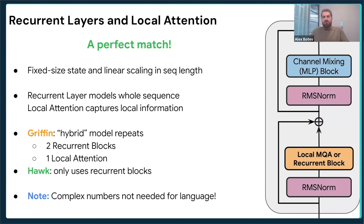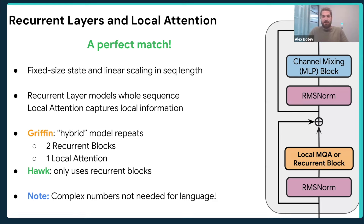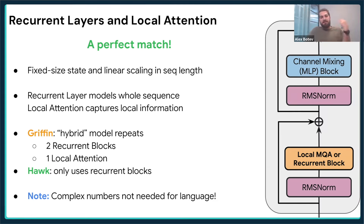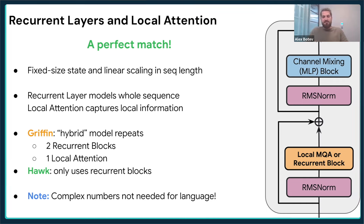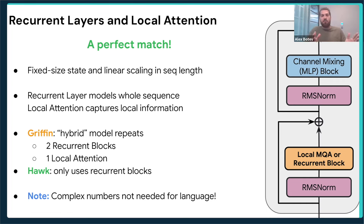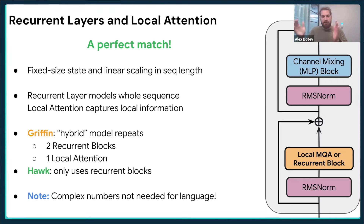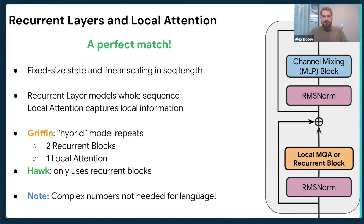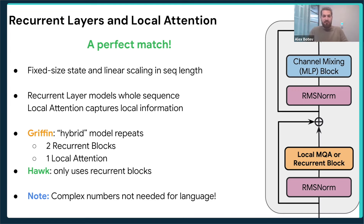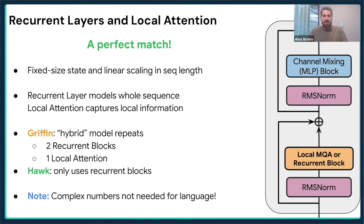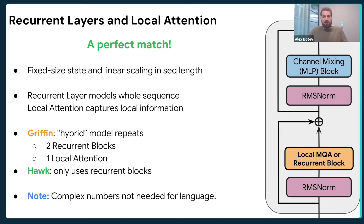We found that the SSM still slightly lagged behind transformers. By the time we had these results, local attention — specifically sliding window attention, where you keep the state of the previous K tokens — was already being used in the literature. We thought this was a perfect match: combining SSMs and local attention, both of which have a fixed state size. In practice, we found the optimal combination is two recurrent blocks followed by one local attention block. This is how our Griffin architecture was formed, and it's what we still use as our main recurrent model architecture.